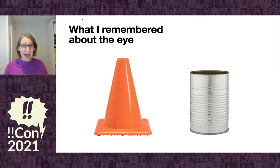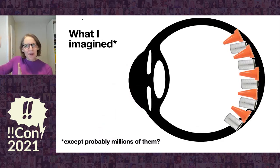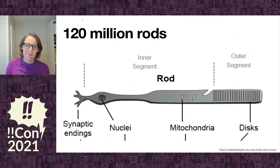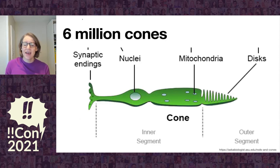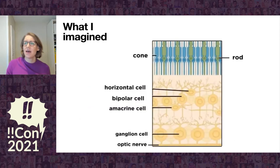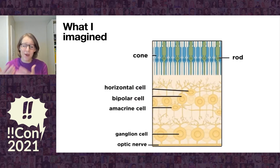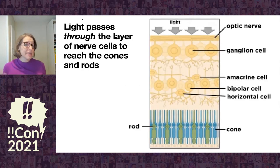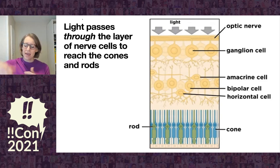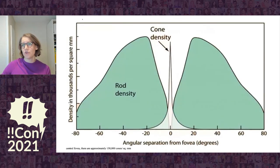So here's what I remembered about the eye: there are cones and rods, and that's about as much as I remembered. Well, turns out rods actually look like this, and there are around 120 million of them, and there are around 6 million cones. I also had imagined — and oftentimes you'll see it oriented this way in papers or books — that the cones and rods were the thing the light was hitting first. Turns out that's upside down, and the light actually passes through this layer of nerves and nerve cells before it gets to those photoreceptors.